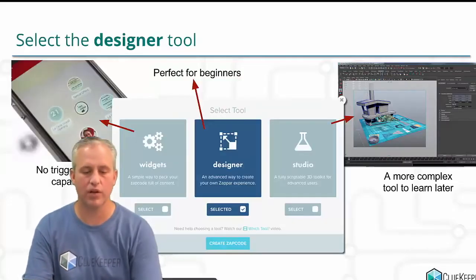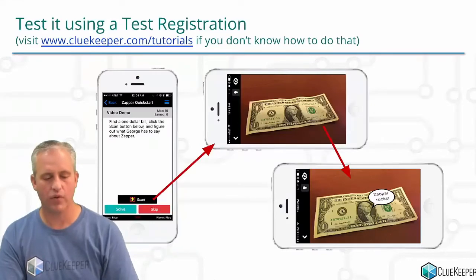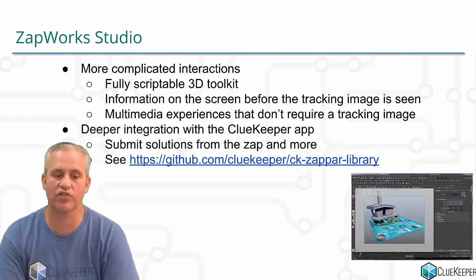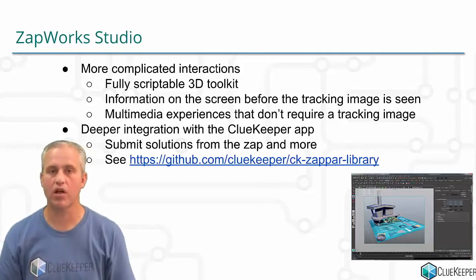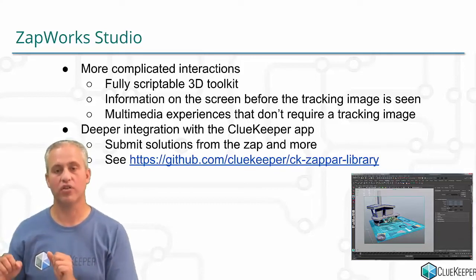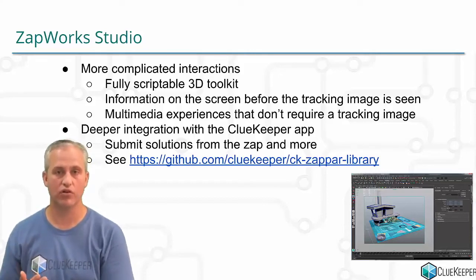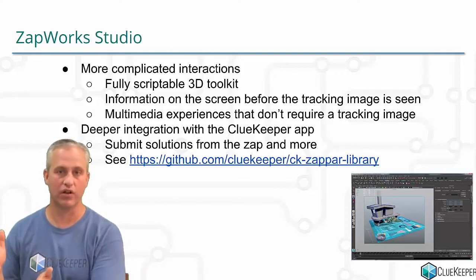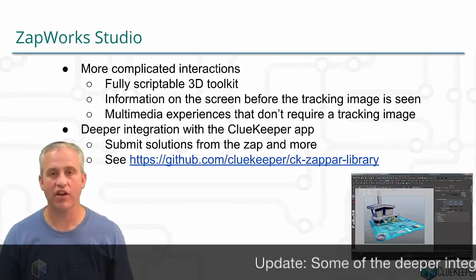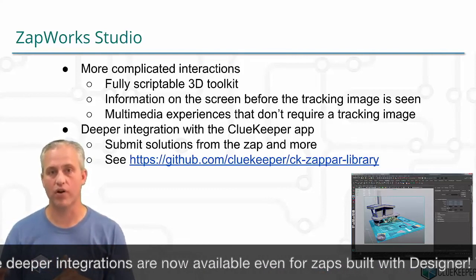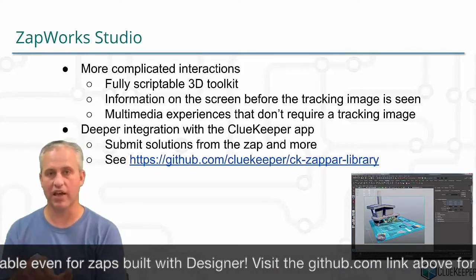There are also a couple of things I wanted to mention about ZapWorks Studio. Studio is for people who've graduated from Designer — it's a fully scriptable 3D interface where you can write JavaScript and bring in three-dimensional elements. For example, you could show something on screen before the tracking image, play a video when they click a button, or show a Braille reference sheet. There's also much deeper integration with ClueKeeper — you can even solve clues from within the Zapp, hiding the solve button and making players complete a game first.